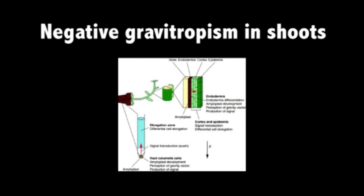Shoots have negative gravitropism, therefore an upward response. While gravity sensing occurs in the root tip, detection of gravity and the subsequent morphological responses can occur anywhere along the shoot. Therefore, the apical meristem of the shoot is not necessarily required for negative gravitropism. In the shoots of a plant, auxin accumulates on the lower flank of the shoot. However, instead of inhibiting growth and causing downward curvature, upward curvature occurs due to the increased growth and differentiation of cells on the lower flank. If the apical meristem of a shoot were to be removed, gravitropism would still occur, as detection of gravity occurs along the cortex and epidermis of the whole shoot system.